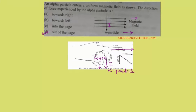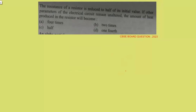I hope you have understood it. Let's go to the next question. The next question is a numerical from electricity: the resistance of a resistor is reduced to half of its initial value. If other parameters of the electrical circuit remain unaltered, the amount of heat produced in the resistor will become — four times, two times, half, or one-fourth?